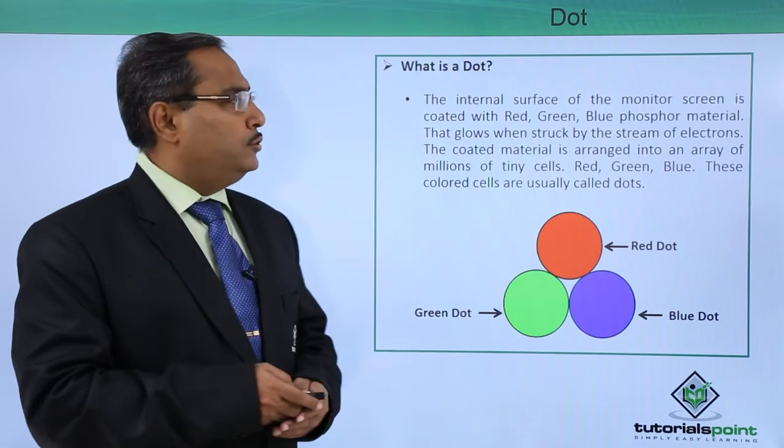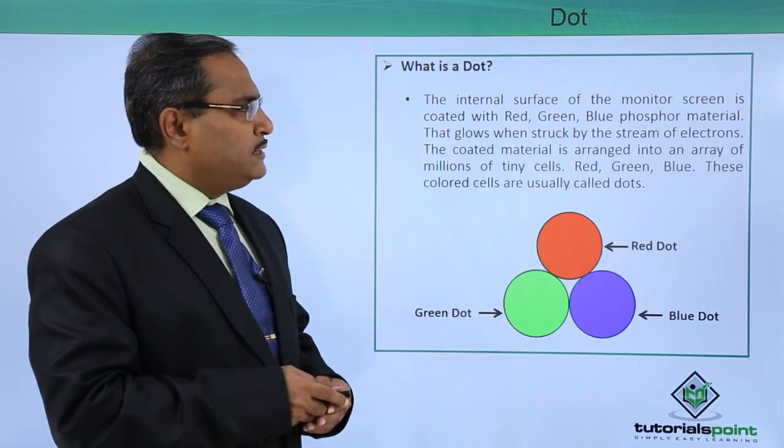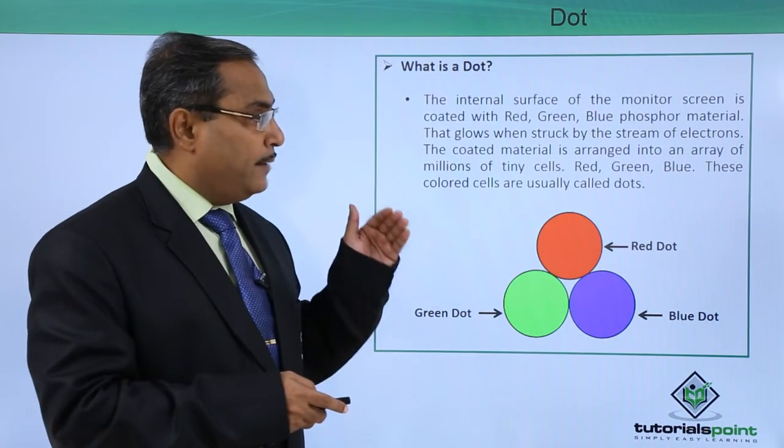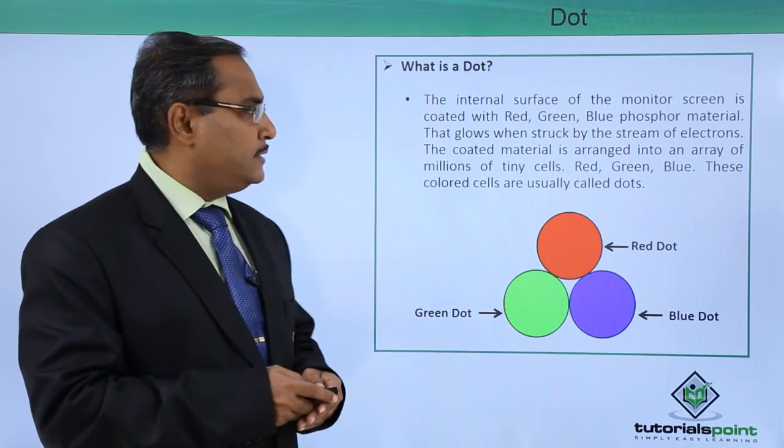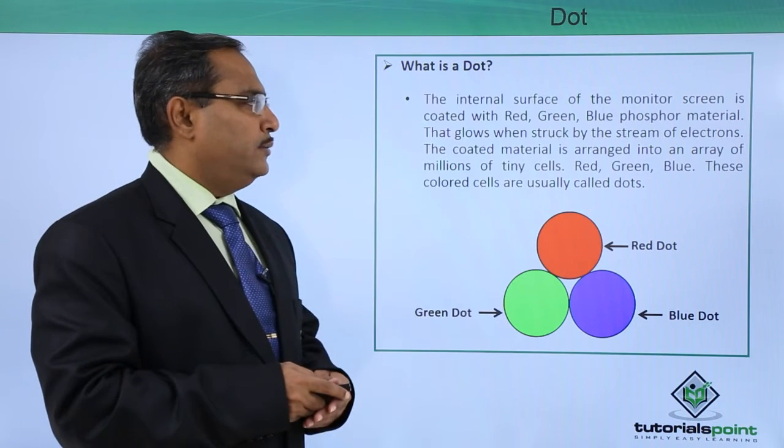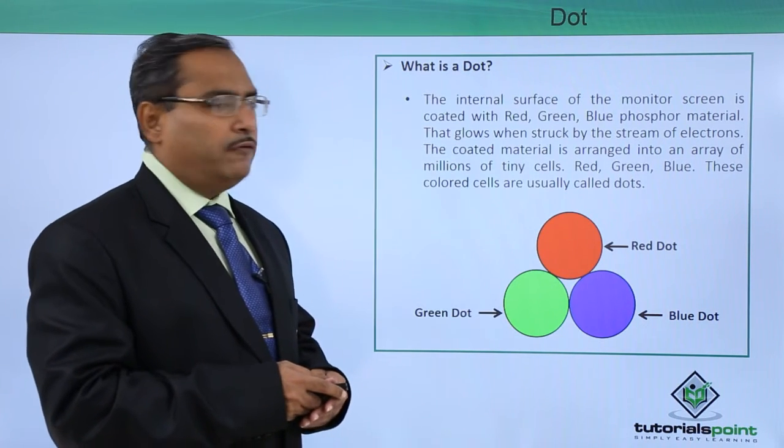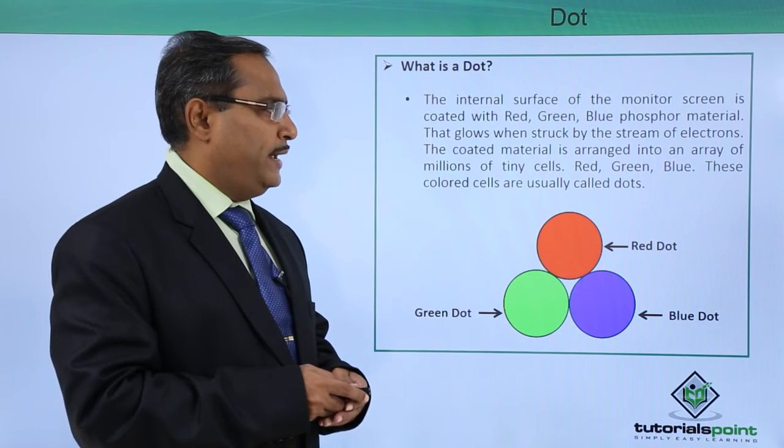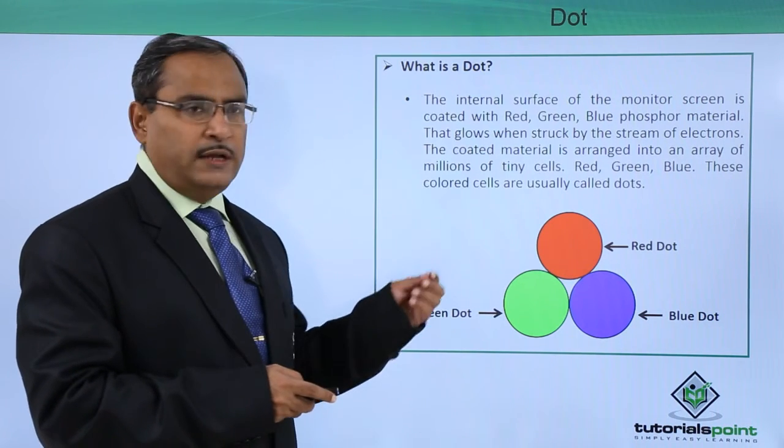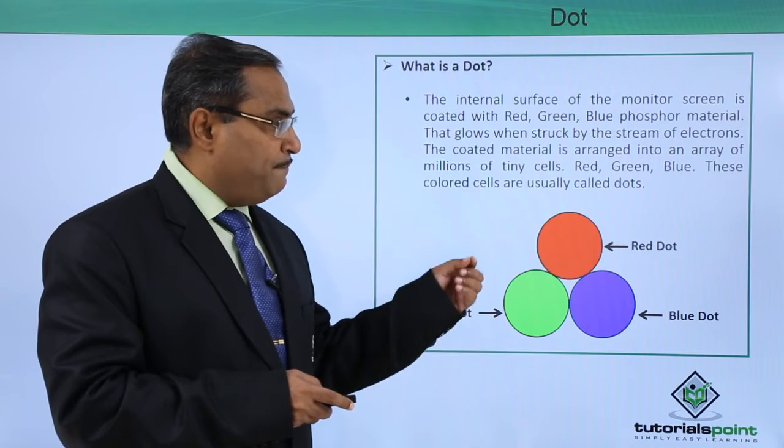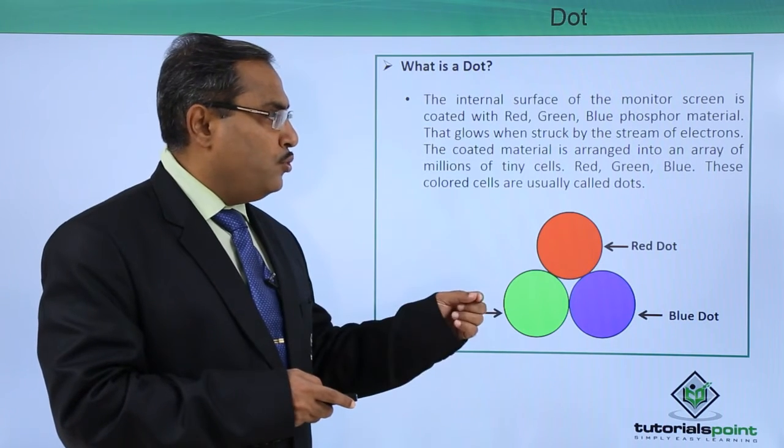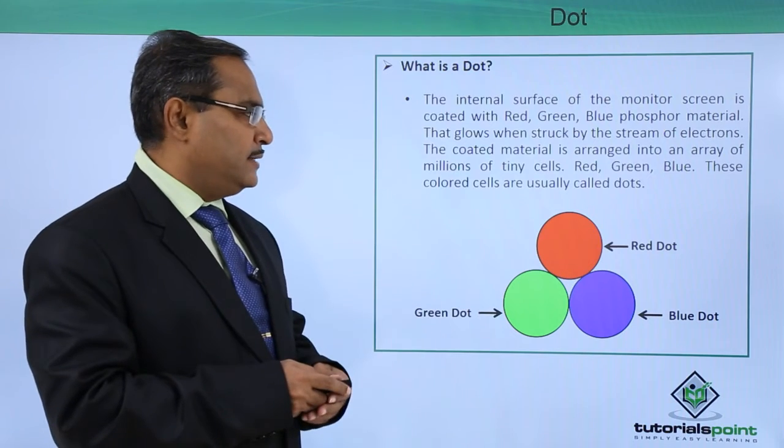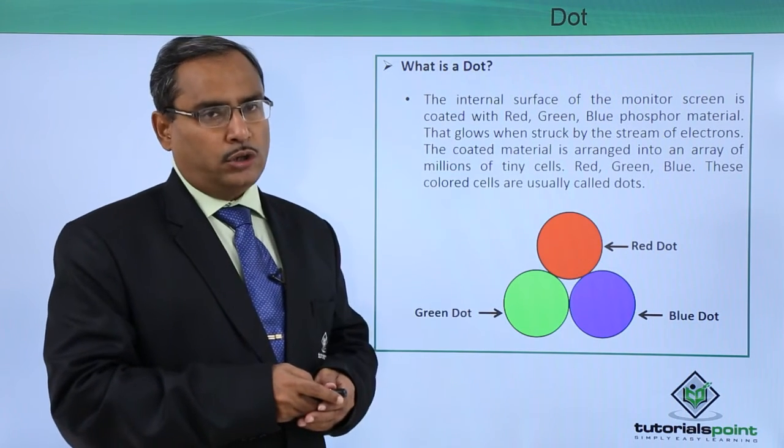Now let us discuss what is a dot. The internal surface of the monitor screen is coated with red, green and blue phosphor materials that glow when struck by the stream of electrons. The coated material is arranged into an array of millions of such tiny cells - red, green, blue. These color cells are usually called dots.